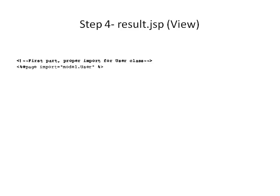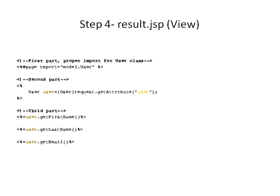Now let's move to Step 4: Result.JSP, which acts as a view in our MVC application. Result.JSP contains three parts. In the first part, we provide a proper import for our User class. In the second part, under scriptlets, we extract the user object from request scope by calling request.getAttribute and specifying the object name, then casting the returned object to a User object. In the third part, using expressions, we call getter methods on the user object to display the data.